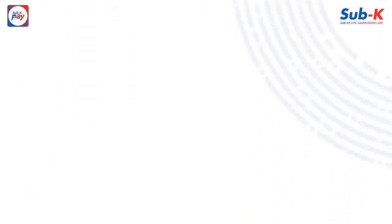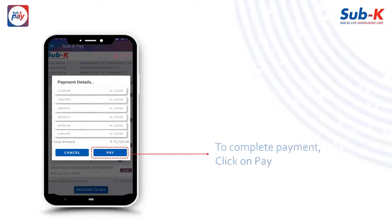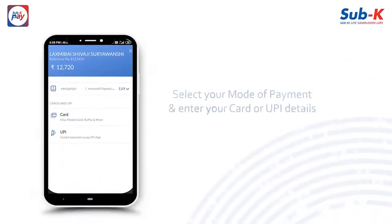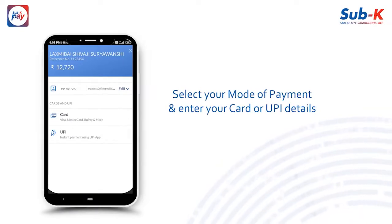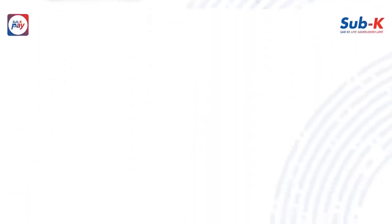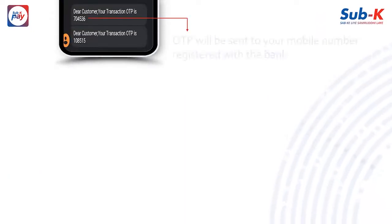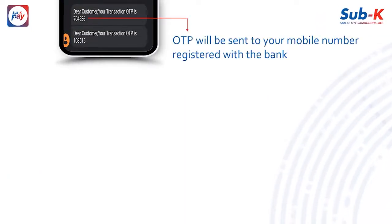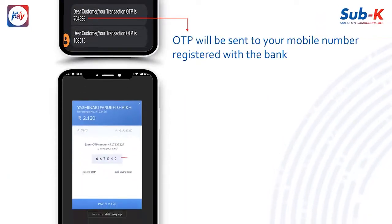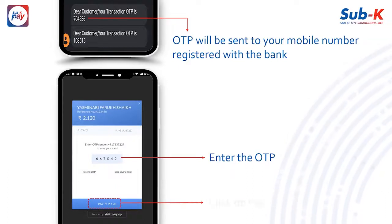To complete the payment, click on Pay. Select your payment method and enter your card or UPI details. An OTP will be sent to your mobile number registered with the bank. Enter the OTP and click on Pay.